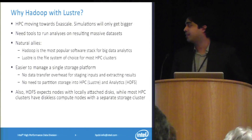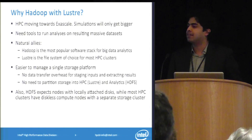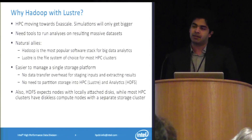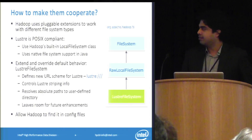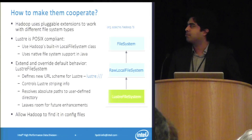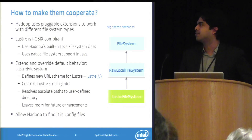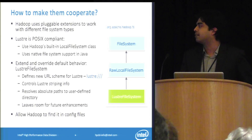One of the use cases we started out with was that most HPC clusters have diskless nodes. HDFS is basically a layer on top of local disks, so without local disks it's very difficult to make HDFS perform reasonably. So this is how we made Hadoop run on Lustre. It uses a pluggable file system extension. It also has support for local file systems — any POSIX-compliant file system can run with Hadoop. So it was very simple: we just extended the built-in classes and created our own Lustre file system class.